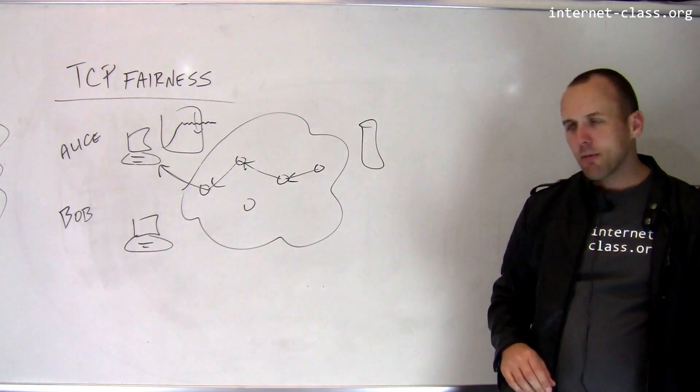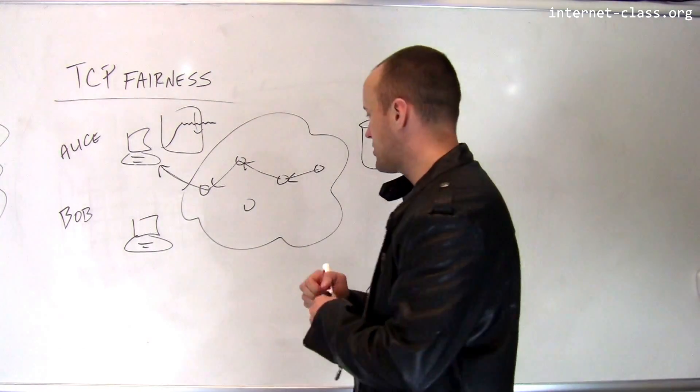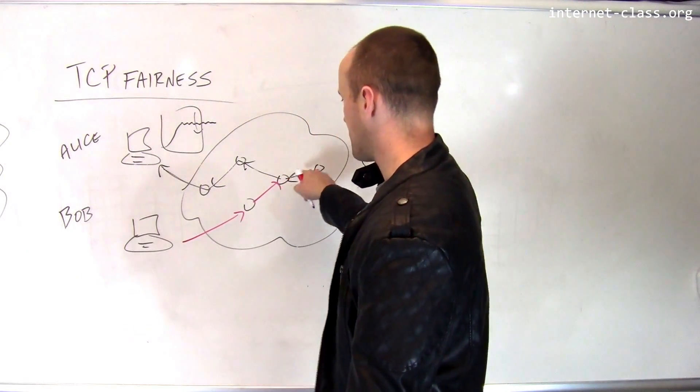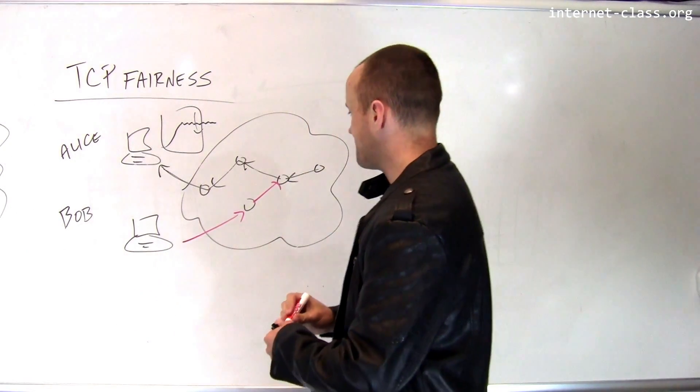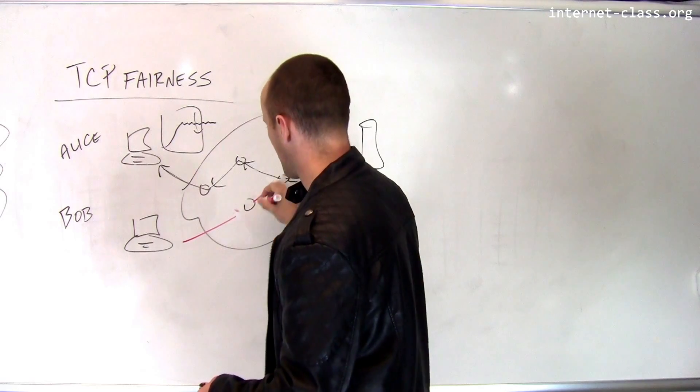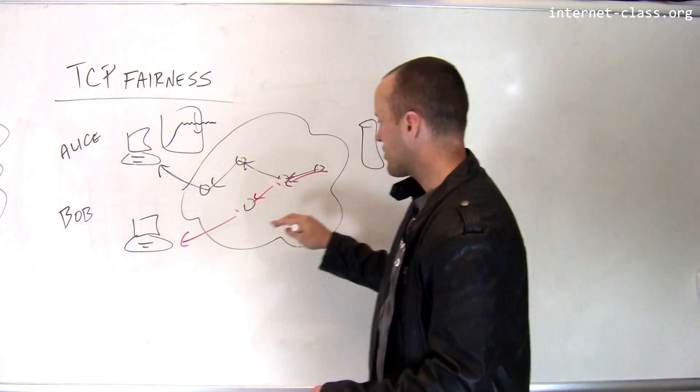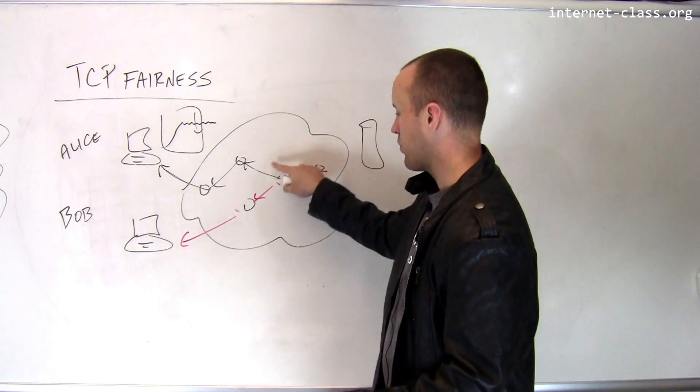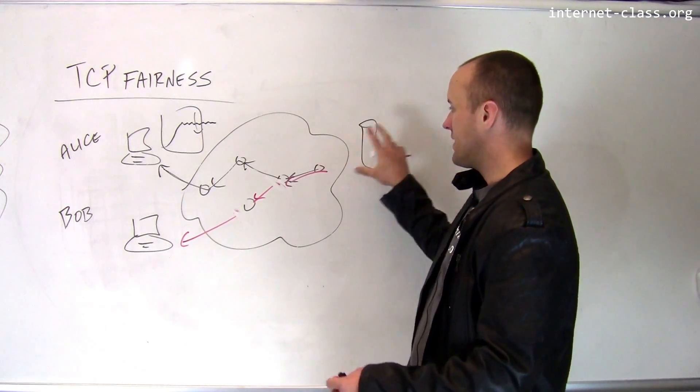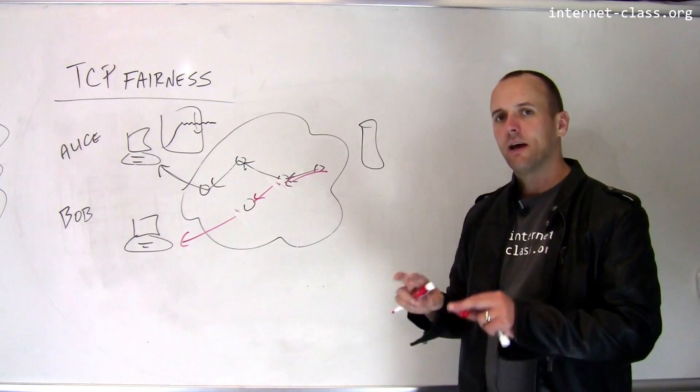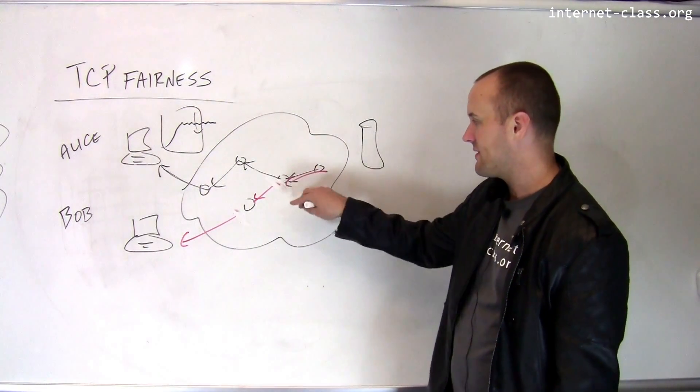Bob probably has a different path to the server than Alice does, right? His path might go through here, it might go through here. But what might happen, let me turn these arrows around so they're pointing the right way, is that Bob is going to create more traffic on this one link that is shared. So if they're downloading from the same server, it's likely that there's some link that both of them are using.